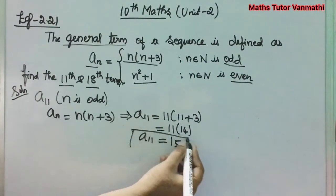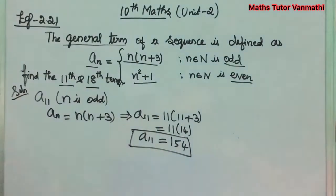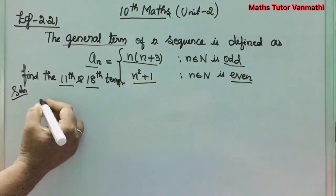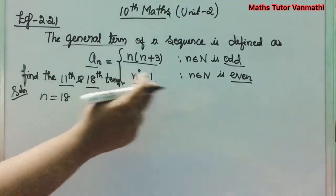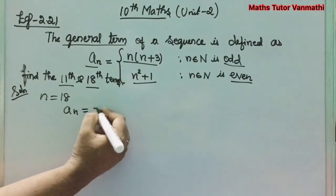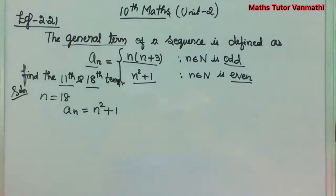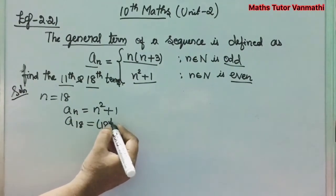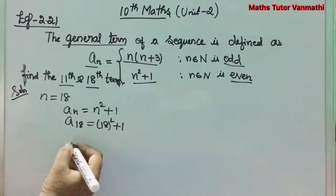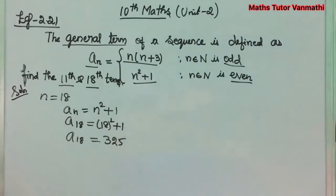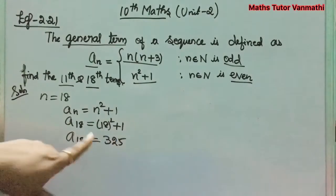So a_11 = 154. Next we find the 18th term. Since n = 18 is an even number, we take the condition a_n = n² + 1. Substituting n = 18, a_18 = 18² + 1 = 324 + 1 = 325.